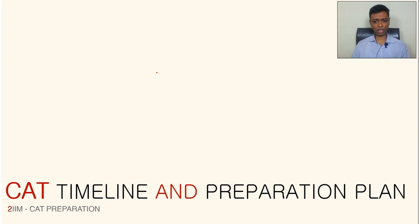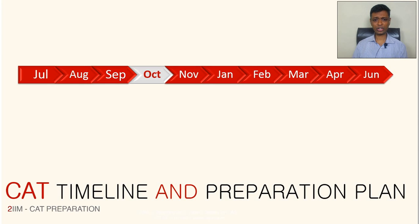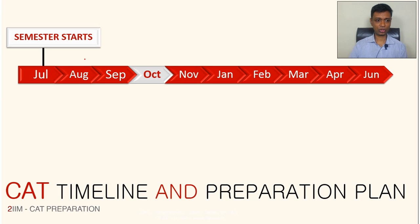I want to look at the CAT timeline and what should be the preparation plan for this exam, especially for college students who are in their pre-final year and planning to take this exam in their final year. For those who have already taken CAT before or are doing a crash course version, we'll have a slightly different version. You should ideally think about starting preparation the year before CAT — when your pre-final year's semester begins — around October, so that you have a timeline of about a year to plan for this exam.